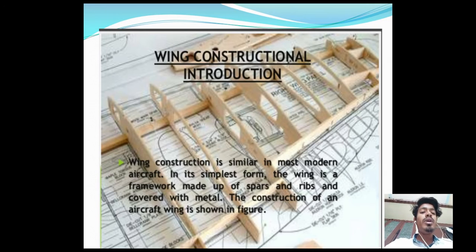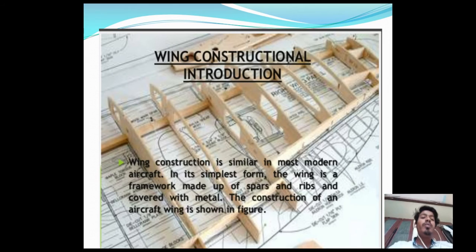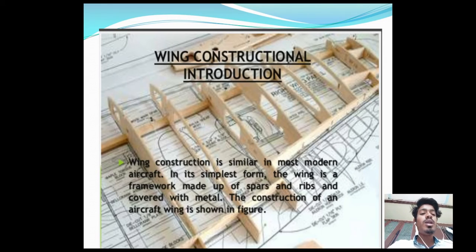Now we introduce wing construction. Wing construction is similar in most modern aircraft. In its simplest form, the wing is a framework made up of spars and ribs and covered with metal. The airfoils are attached to the spars or ribs, which are then covered with a metal surface to form the wing.